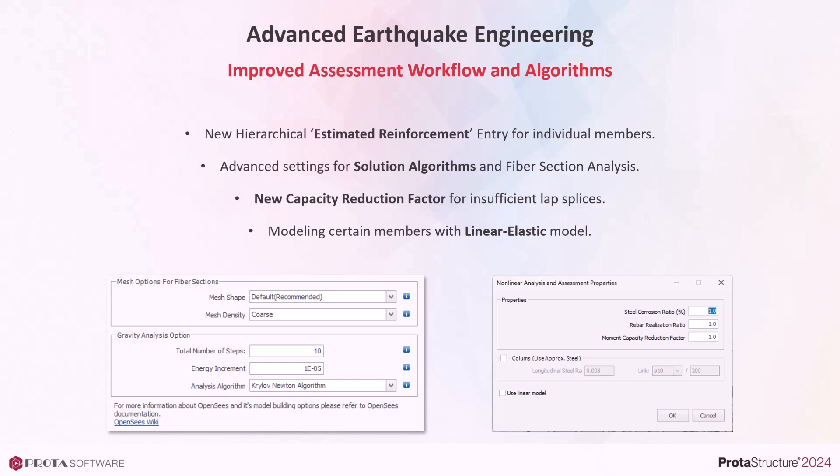Protostructure already had capacity reduction factors for corrosion and rebar realization. A new coefficient was introduced to cater for additional capacity reducing factors such as insufficient lap splices. And last but not least, you have the option to model any member as linear elastic during assessment, which is usually necessary to exclude members where you don't expect any non-linearity.